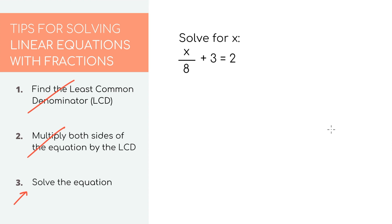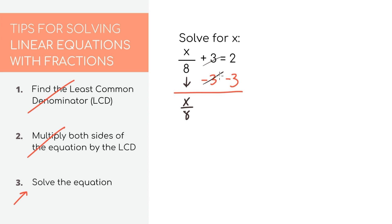Since my X is already on the left, I want all of my numbers on the right. In order to get rid of the plus three, we need to do the opposite and subtract three. Let's remember to do it to both sides. When we put it all together, we'll get that X over eight — three minus three equals zero, so that cancels out. And two minus three equals negative one, so we have X over eight equals negative one.